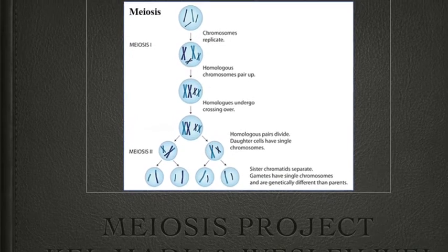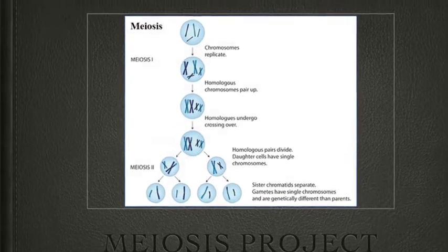Stages of Meiosis by Kelma Dew and Wesley Way. This is the parent cell, has n equals 3, which is the haploid number.